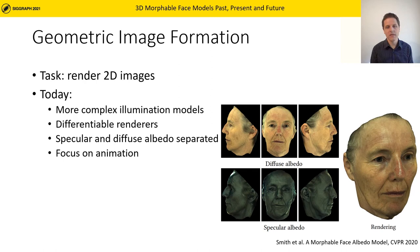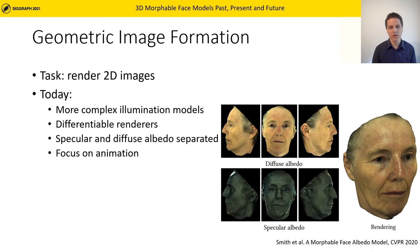At last year's CVPR, several works explored the separation of diffuse and specular albedo to enable more complex and more realistic illumination simulation. A recent focus on the rendering side is towards animation, including neural post-processing or neural rendering.